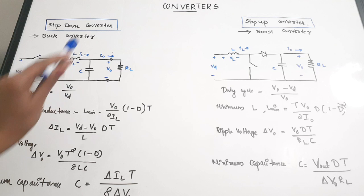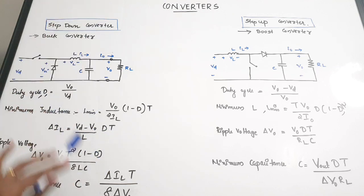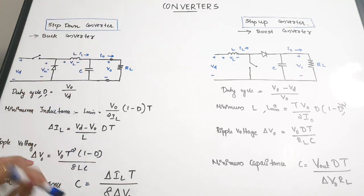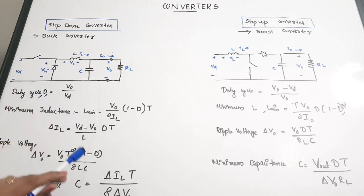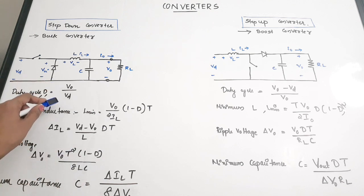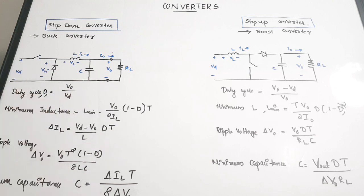The first equation is duty cycle, represented as D. The duty cycle of a step-down or buck converter is given by D = V0 / Vd, where V0 is the output voltage and Vd is the input voltage. It is a very simple equation.